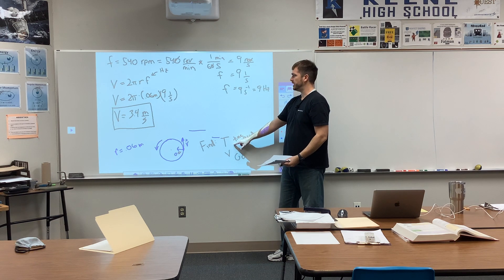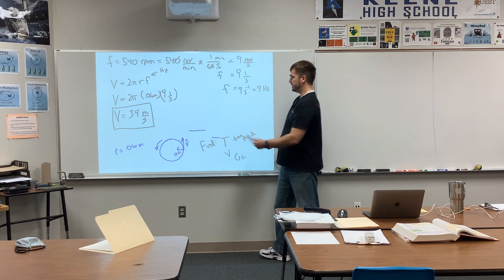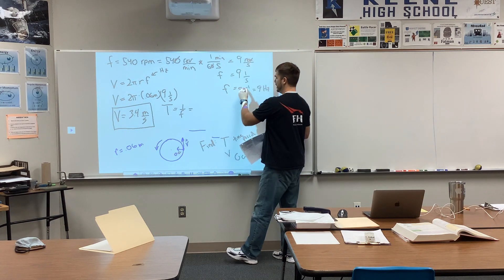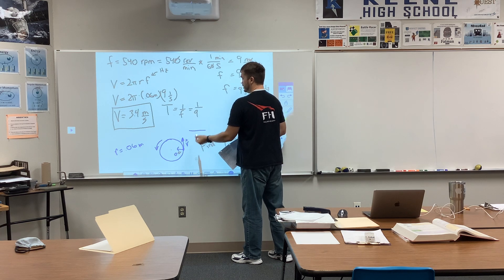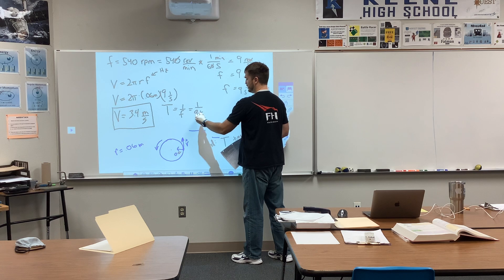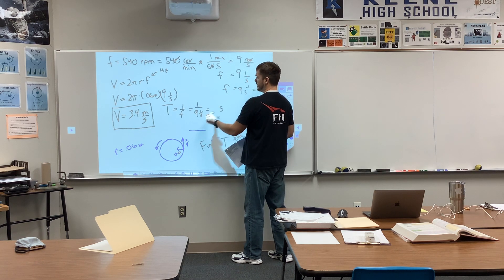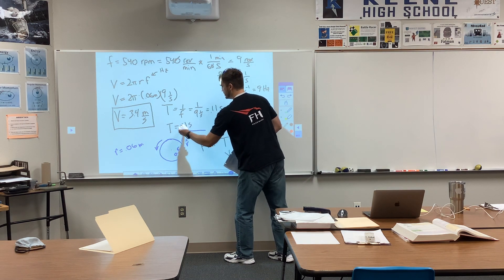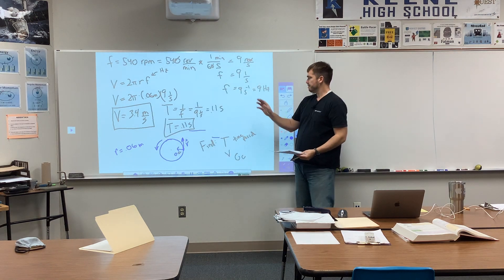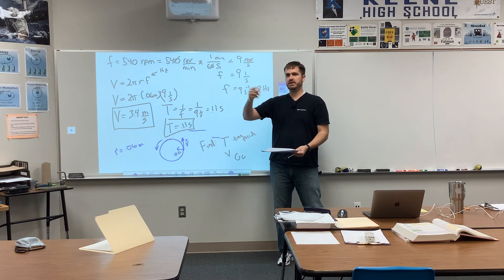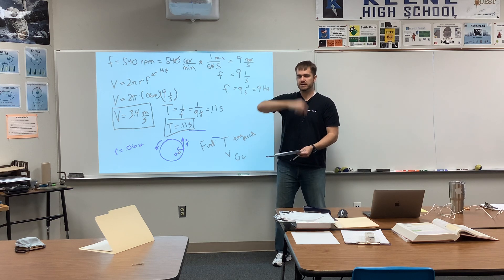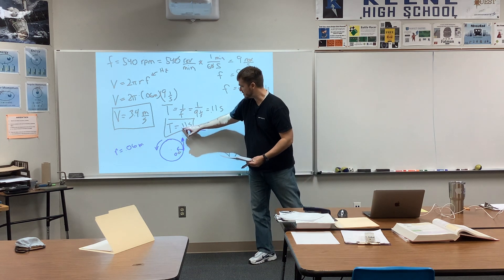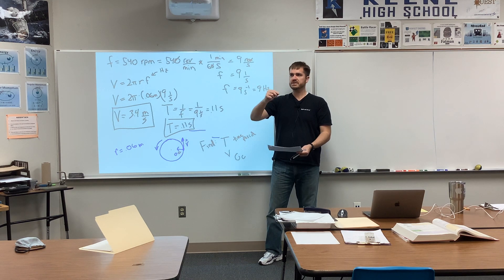I found the velocity, but the first thing they asked for was the time period. The formula for period is T = 1/f. The frequency is 9 Hertz, so T = 1/9 — that's 0.11 seconds. Does that make sense? If the frequency is 9 Hertz — meaning it goes around 9 times every second — then it takes 0.11 seconds, part of a second, to go around one time. That checks out.